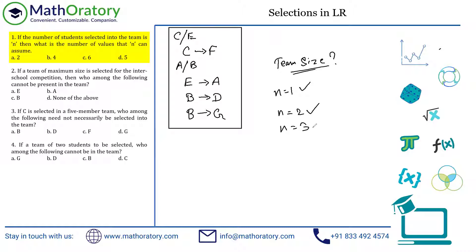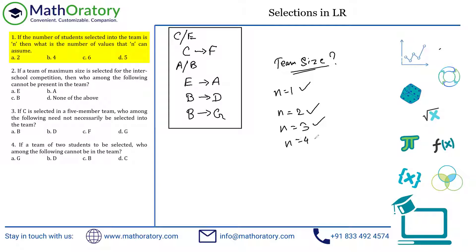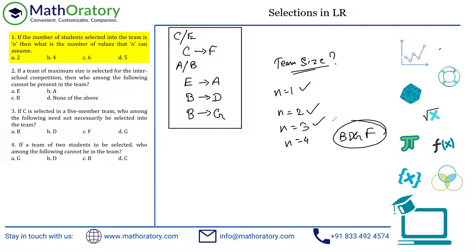For N equal to three: I can select B, D, and G. If I select B, I have to select D and G. That gives a team of size three — perfectly fine. For N equal to four: starting with B, D, G, I cannot select A because I've selected B — that violates the A slash B constraint. But I can select F, because C is not selected and F doesn't have any conflicting condition on its own. So team of size four is also possible.